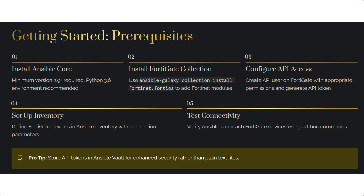To get started, we will need Ansible Core and Python 3. First, install Ansible, then install the Fortinet Ansible collection using the command: ansible-galaxy collection install fortinet.fortios. We also need an API access setup on our FortiGate device — create an API user with appropriate permissions, generate an API token, and set up an inventory file with our device details.